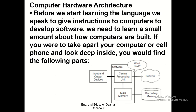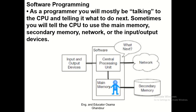After processing, the program can be saved in the secondary memory as output files or input files. In programming, you will mostly be talking to the CPU and telling it what to do next. Sometimes you will tell the CPU to use the main memory, secondary memory, network, or any input/output device.